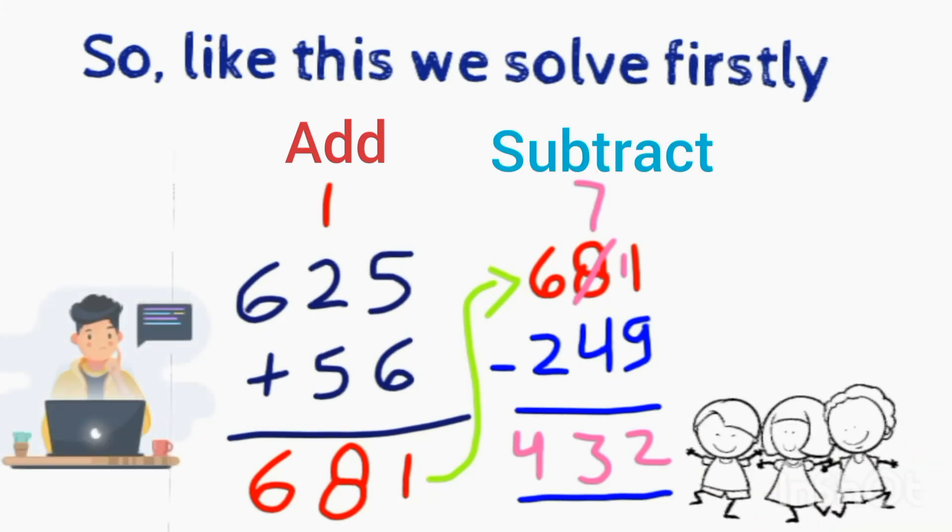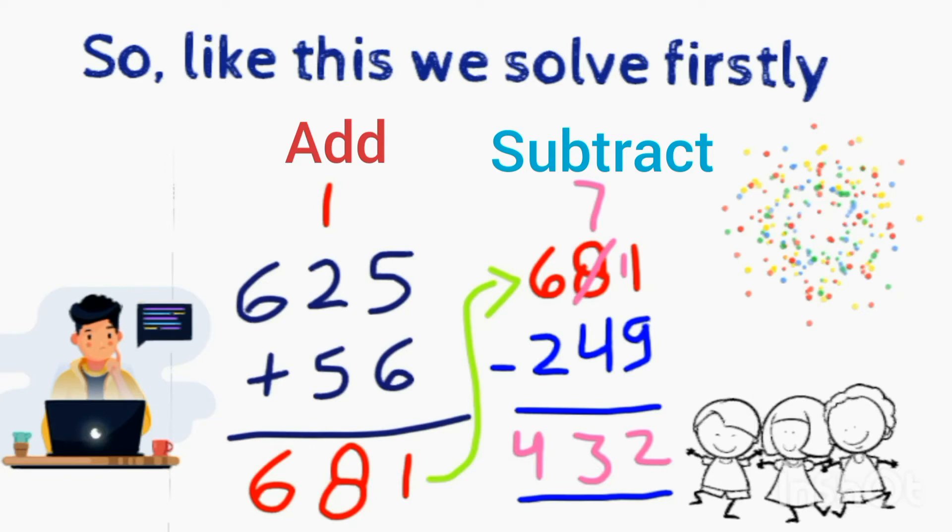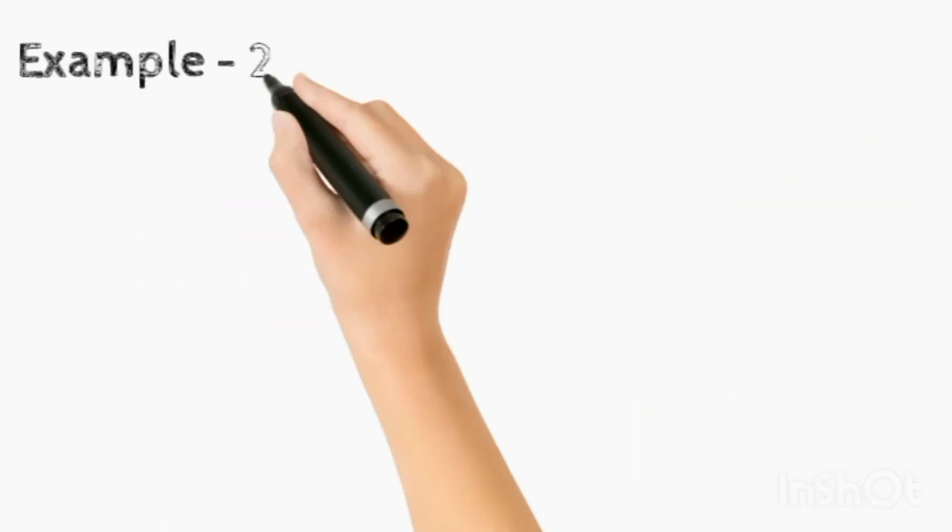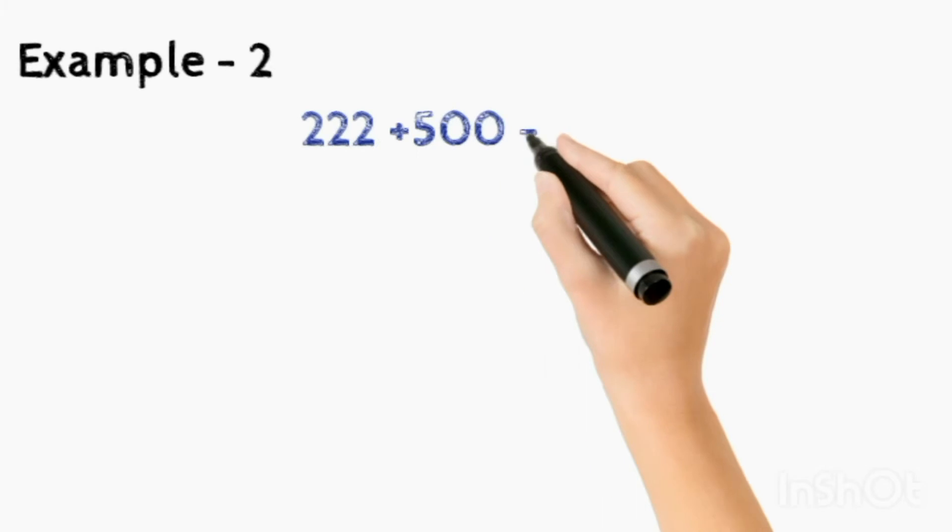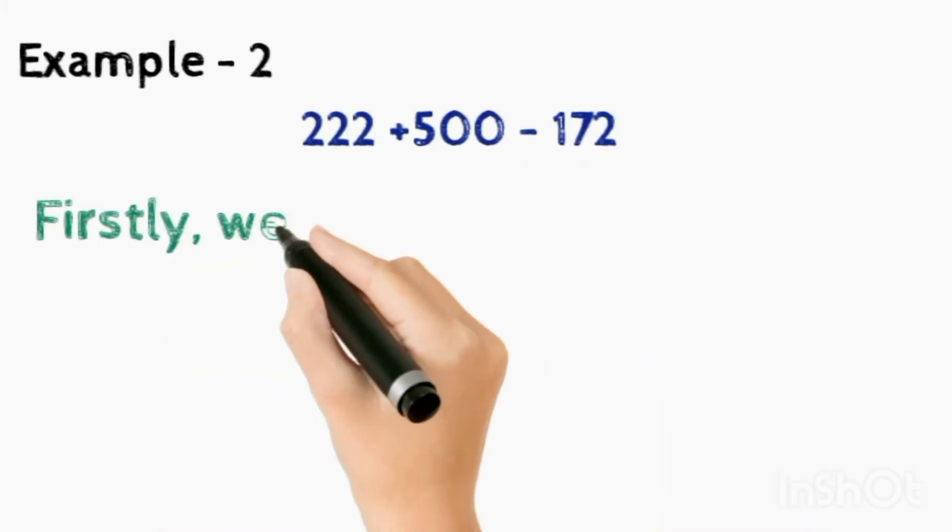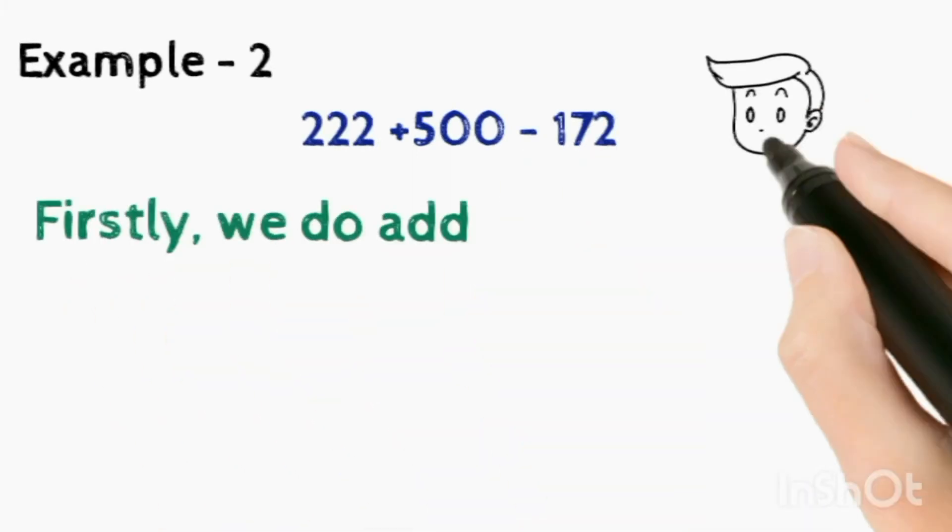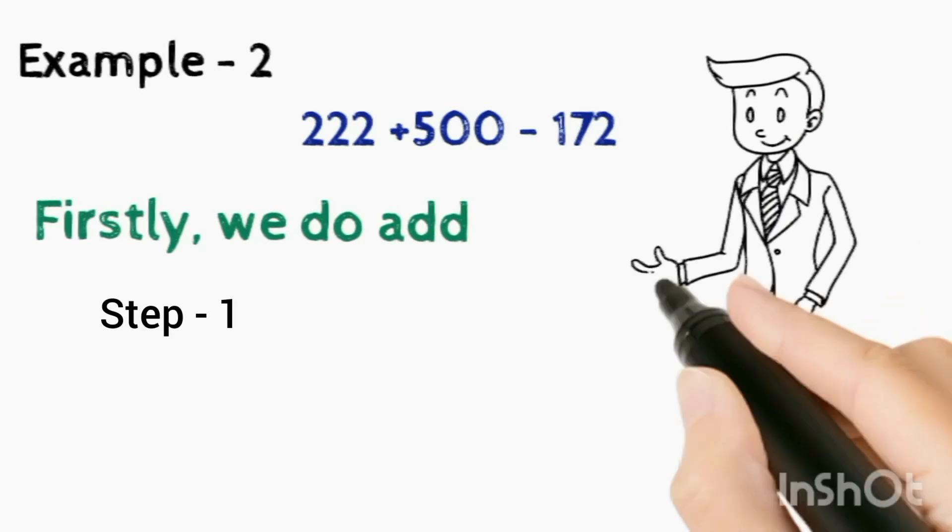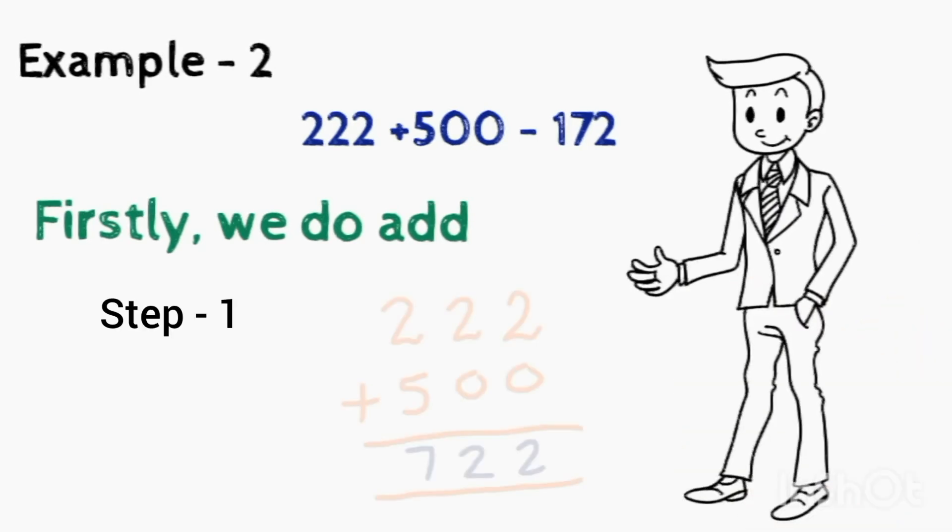Now we take another example. Example 2: 222 plus 500 minus 172. Firstly we do add. Step 1: 222 plus 500. 2 plus 0 is 2, 2 plus 0 is 2, and 5 plus 2 is 7.